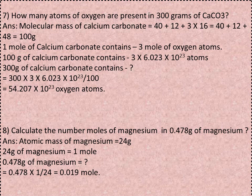Q8: Calculate the number of moles of magnesium in 0.478g of magnesium. Atomic mass of Mg = 24g. 24g Mg = 1 mole. So 0.478g = 0.478 × (1/24) = 0.019 moles.